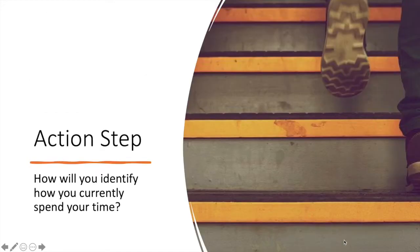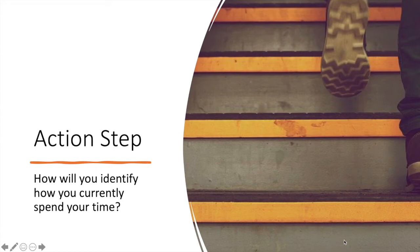Now identify your action step. We've talked about time tracking and seeing where the time is going, and we've talked about identifying time wasters. How will you identify how you currently spend your time? It might be that you'll decide to do a time log for the next week, or you might want to focus on specific areas — like how much time you're really putting into your academic study or coursework. Take a moment and identify what you'll do next.